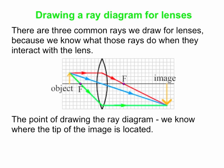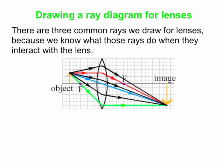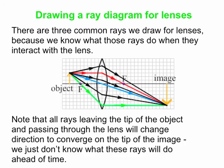That's the whole point of drawing the ray diagram — we know where the image is, that it's a real image because the light rays all pass through that point, and that it's larger than the object and inverted. You only need to draw two of the three rays to get the image location, but all rays leaving the tip of the object will converge at the tip of the image. Once we've established where the image is, we can draw as many other rays as we want.